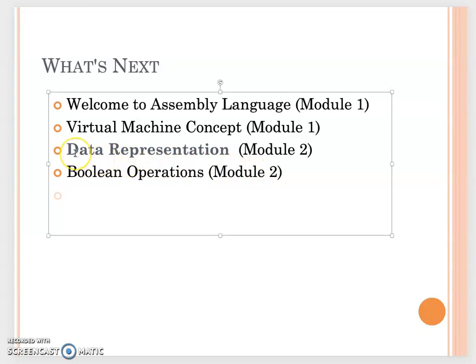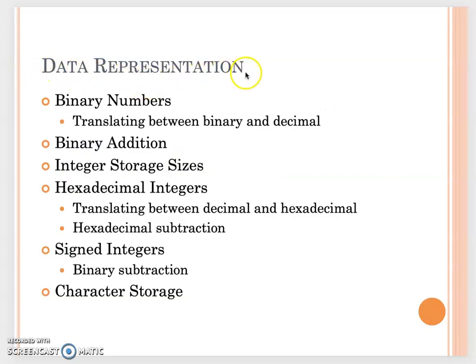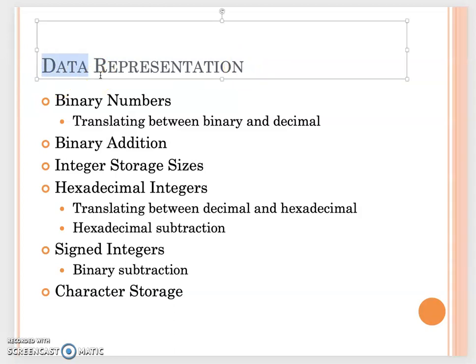Let's talk about what data representations are. Data representation is about how we should save data in hardware. When you buy a hard drive or RAM, they tell you 1TB or 16GB. The unit to calculate storage is the byte. Each byte is 8 bits, and each bit in a computer system can only be 0 or 1. All different types of data are stored in bits.